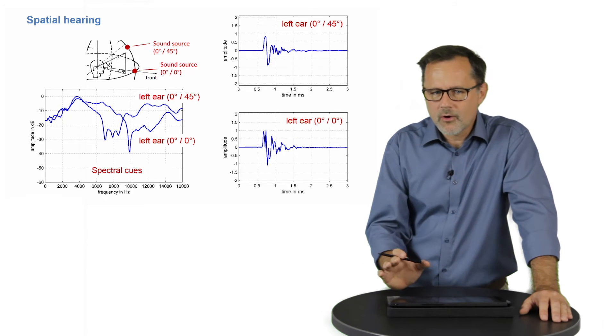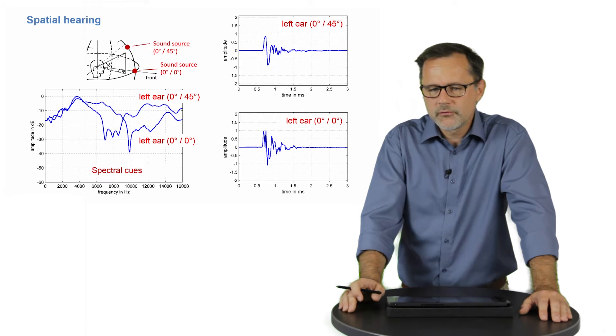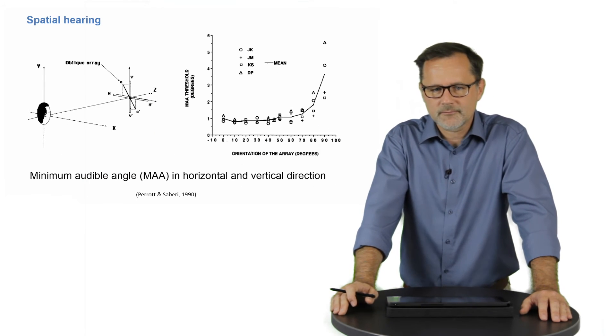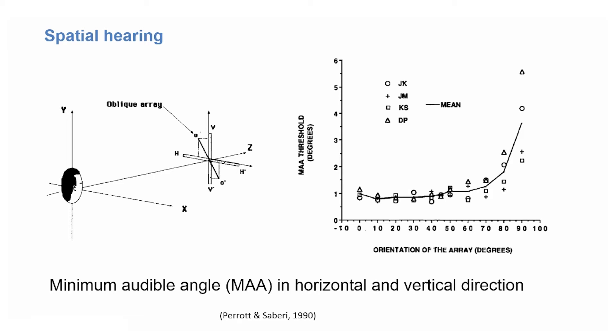If we ask how accurately we can localize, we could use the so-called minimum audible angle as an indicator. This has been determined with a setup like this, where an array of closely spaced loudspeakers was used, and the subjects had to identify which of these loudspeakers was playing. The array was gradually turned from horizontal to vertical, and if you look at the results on the right side, you can see that the subjects were able to discriminate source locations by about 1 degree if the loudspeakers were oriented in horizontal direction, and that the resolution dropped to 3 to 4 degrees when the sources were separated in vertical direction.